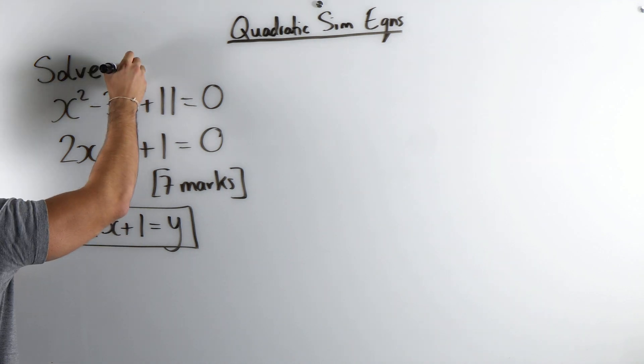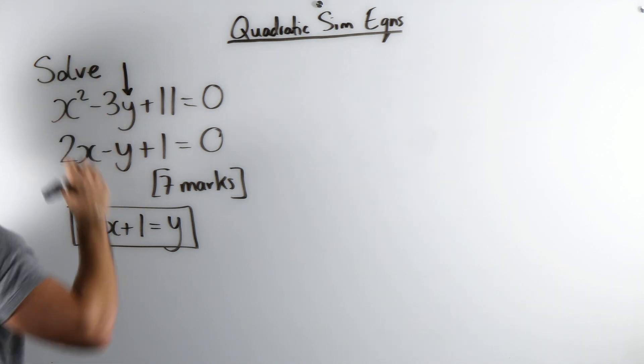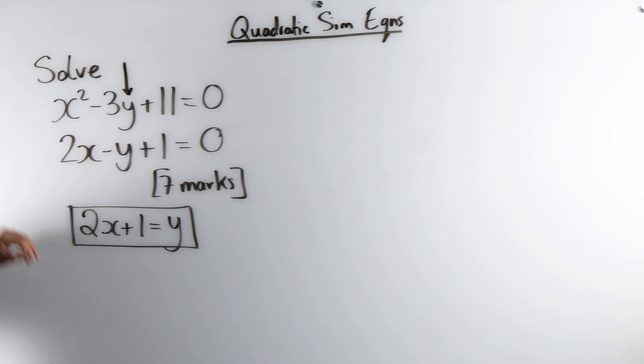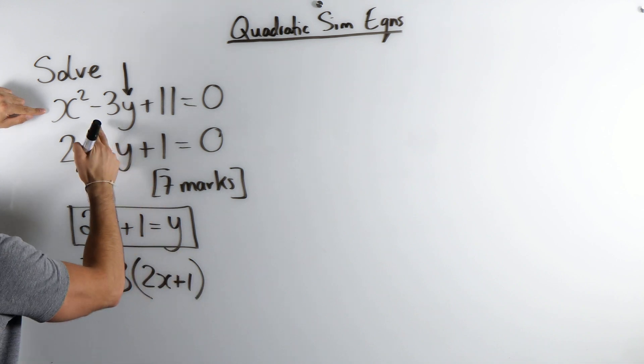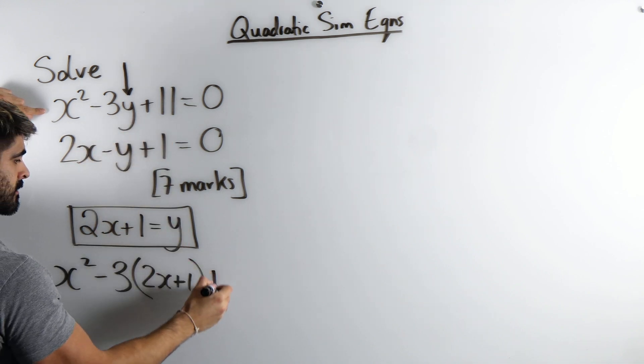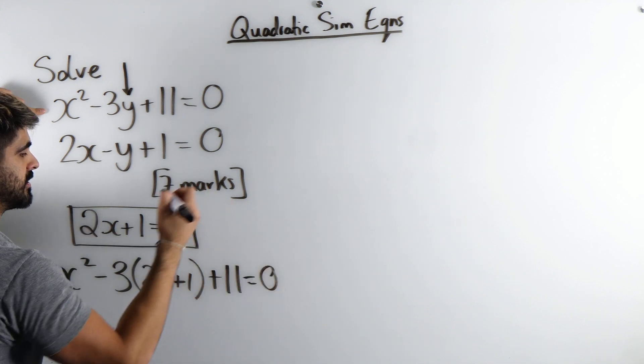Now wherever we see y in the other equation, we're just going to replace it with 2x plus 1. So we have x squared minus 3 times 2x plus 1, plus 11 equals 0.